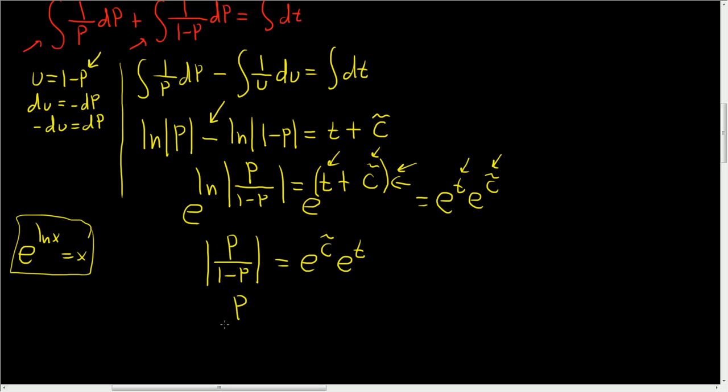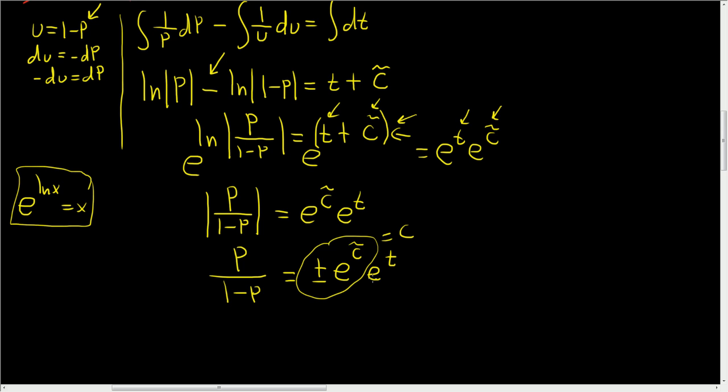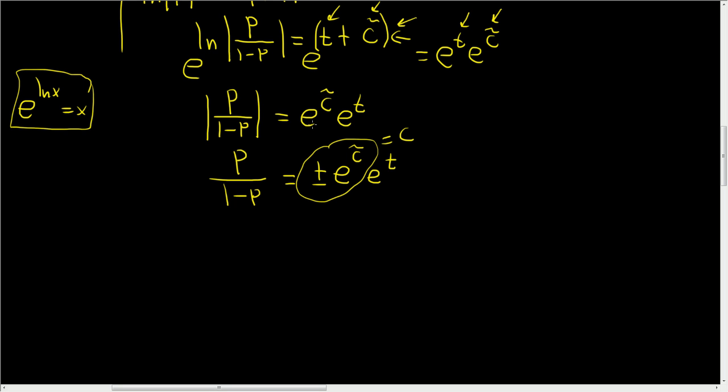When you drop the absolute value, you do get a plus or minus here. So you get plus or minus e to the c tilde, e to the t. And now what we can do is we can call this c. So we can let this be c. And you can do that. c tilde is arbitrary. e to the c tilde is arbitrary. So plus or minus e to the c tilde is arbitrary. In other words, we don't know what c tilde is. We don't know what e to the c tilde is. So we certainly don't know what this is. So we can just call it capital C.